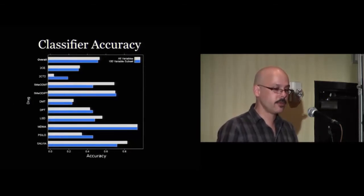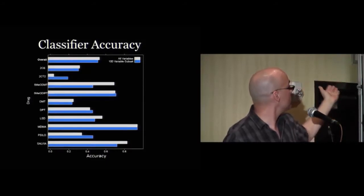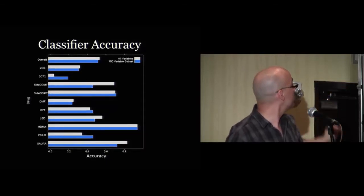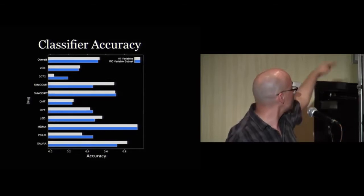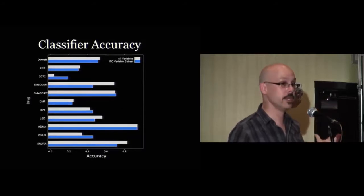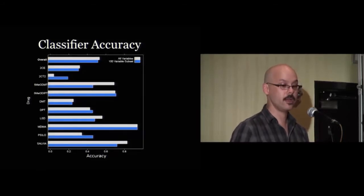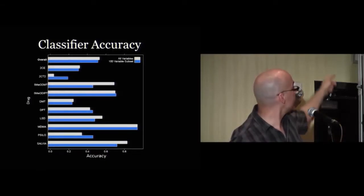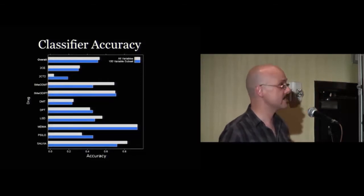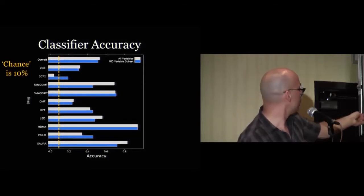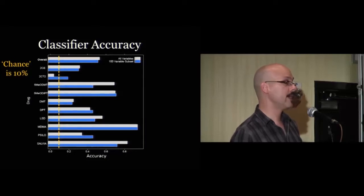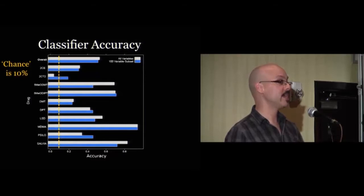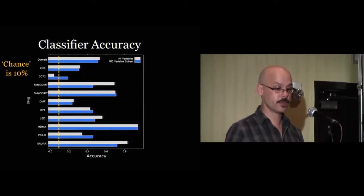Accuracy differs from drug to drug. MDMA, third from the bottom, is really pretty accurately guessed — when people describe MDMA there's strong consistency, more than for other drugs. Interestingly, for 2CT2, reducing from 1,000 words to 100 words actually seems to improve performance. The bottom numbers may not look impressive, but remember: with 10 drugs, random guessing gives only 10% accuracy, and we're well above chance for all drugs with our 100-word subset.